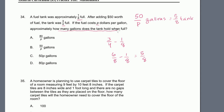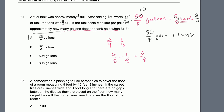How many gallons does the full tank hold? To solve for one full tank, multiply both sides by the reciprocal 8/5. The fives cancel and the eights cancel, leaving 1 tank = (8/5) × (50/P) = 8 × 10 / P = 80/P gallons. That is choice A.